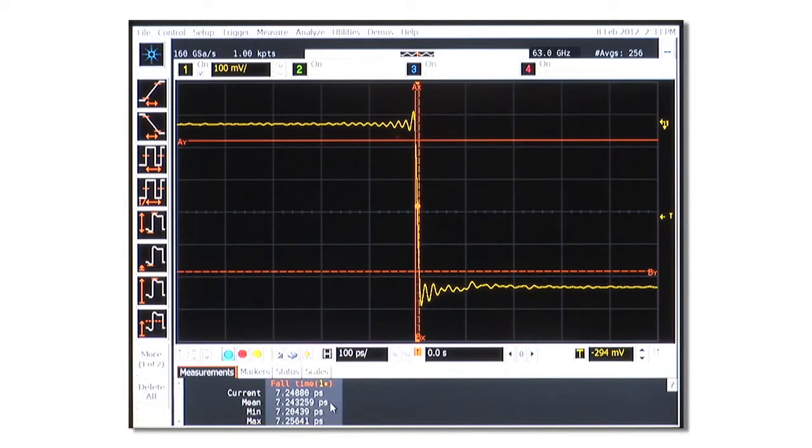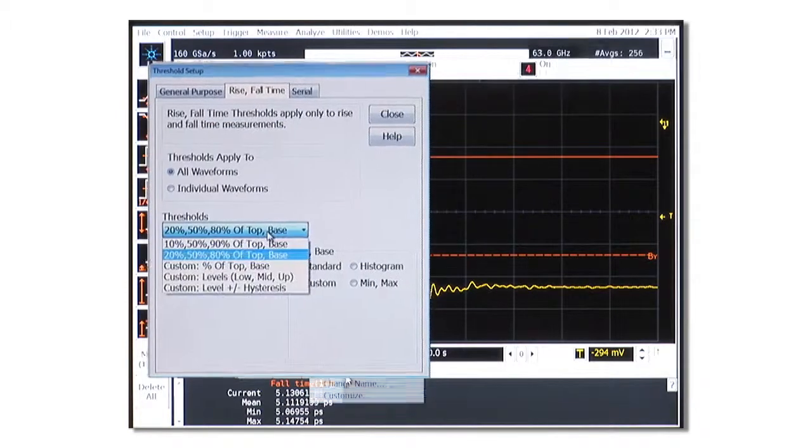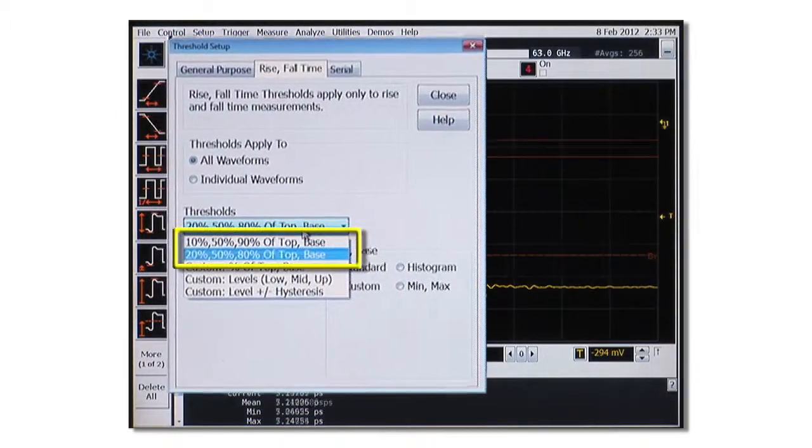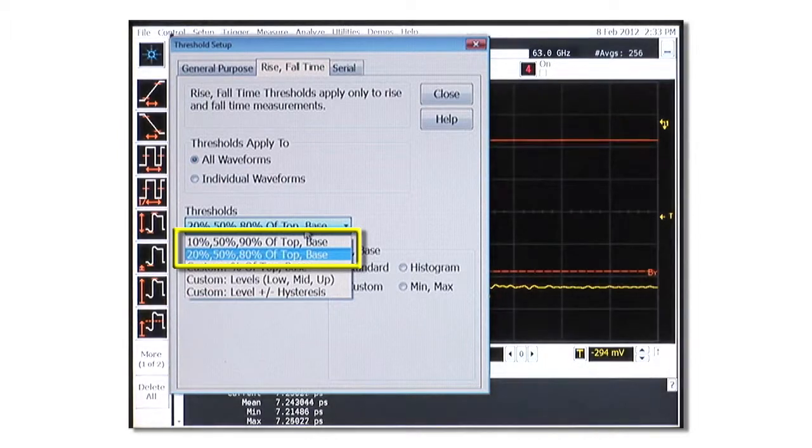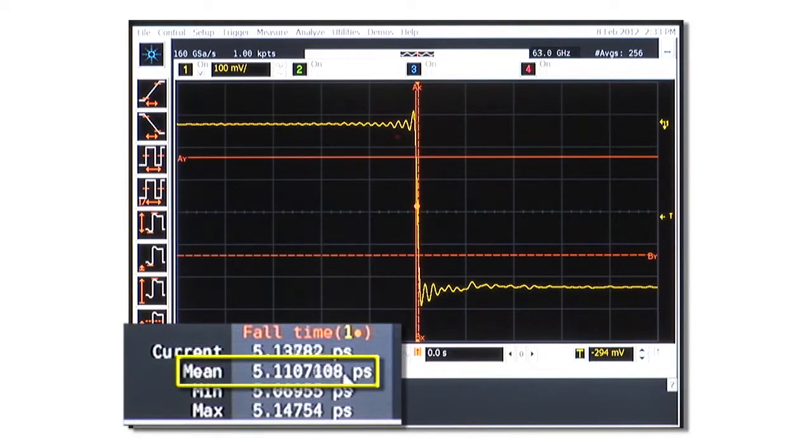On the scope, we're measuring the signal after edge acceleration at 63 GHz scope bandwidth. We've set up a rise time measurement for both 20-80 and 10-90 rise times, demonstrating a rise time of 5 picoseconds for the ultra-fast edge generated by the pulse generator. An edge this fast has never been measured on a real-time oscilloscope before.